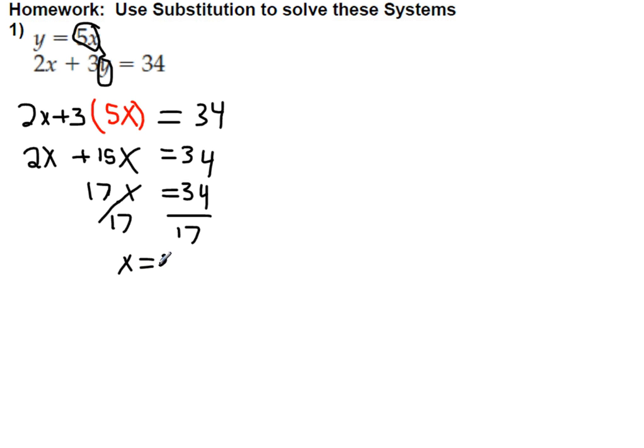Now if you picked a different variable, I guess that's fine, but you should have still got x equals 2 as part of your answer. Now I'm going to take this y equals 5x and put a 2 in for x. And so we get y equals 10.